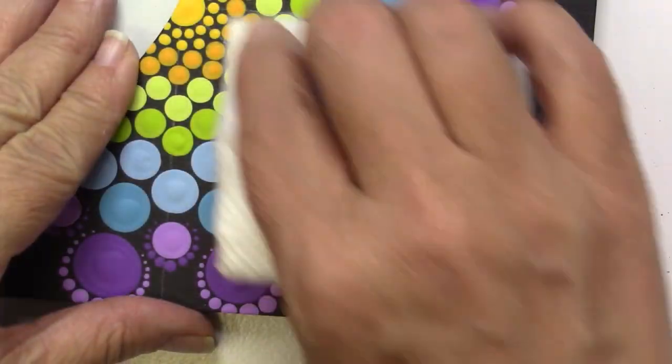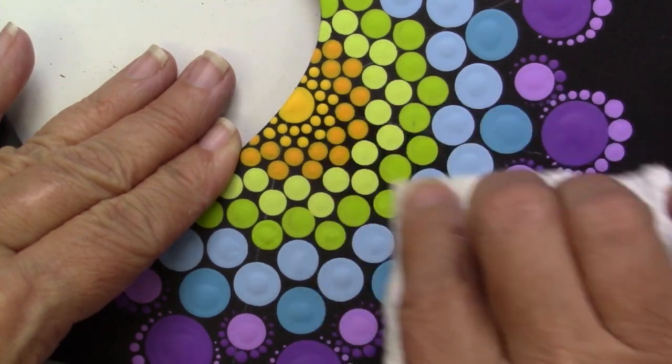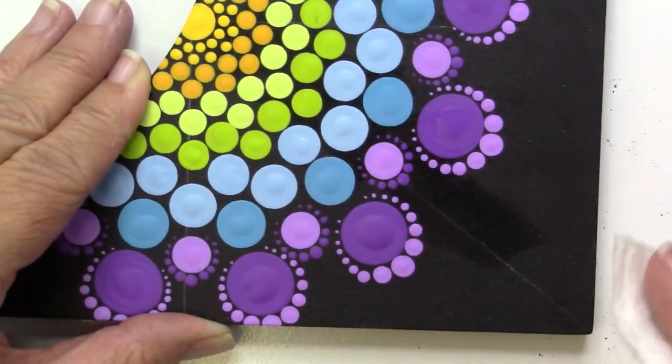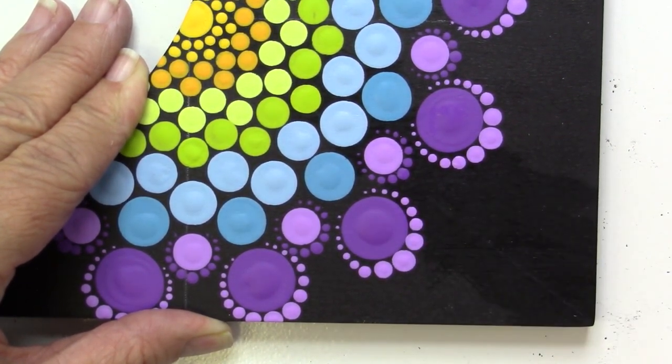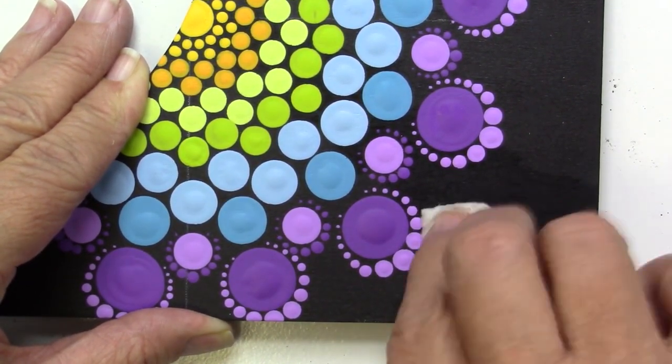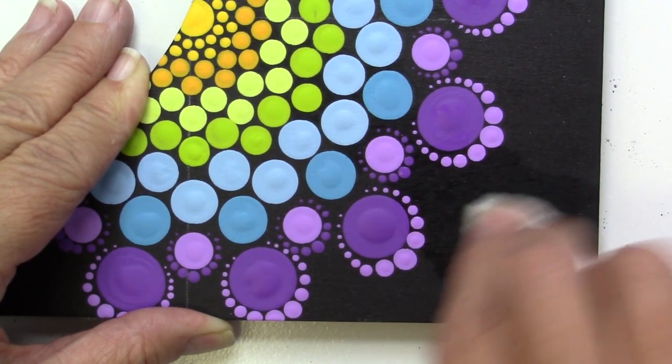Now I'm going to brush off with a damp paper towel the lines. Everything's been dried, so it's all been set aside for hours and I've had a chance to let it dry well. And I'm just going to rub off lightly those marks.